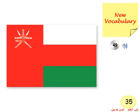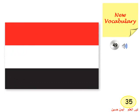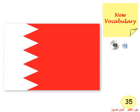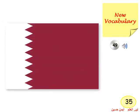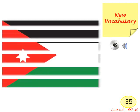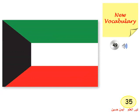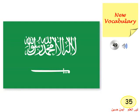New vocabulary for Unit 5. Listen and say. Amman. Yemen. United Arab Emirates. Bahrain. Qatar. Jordan. Kuwait. Saudi Arabia. Flag.